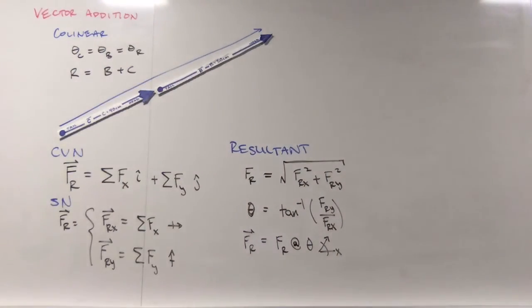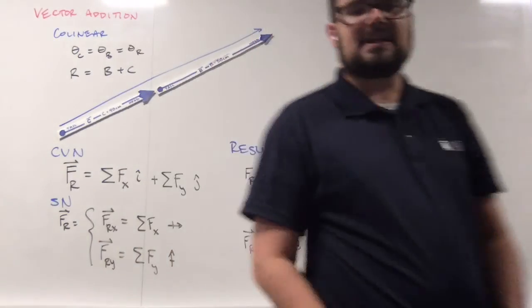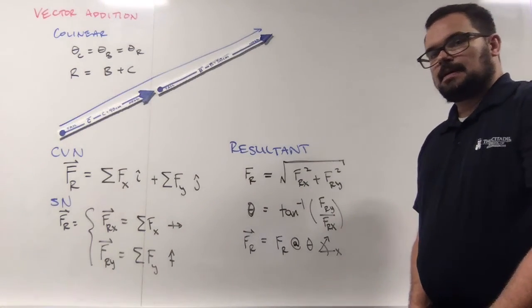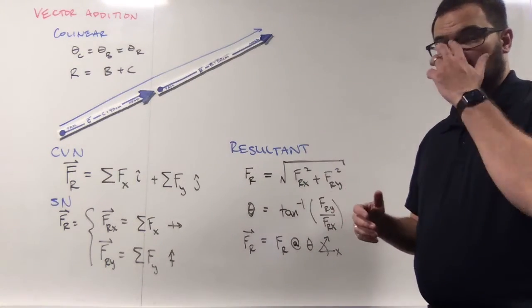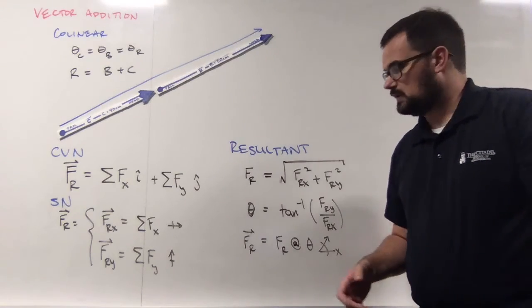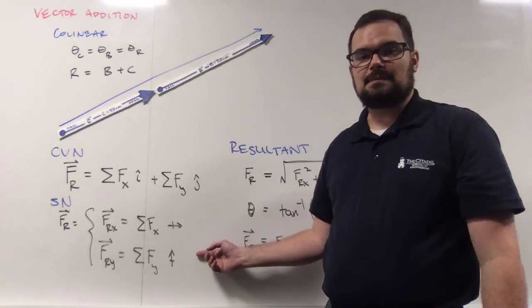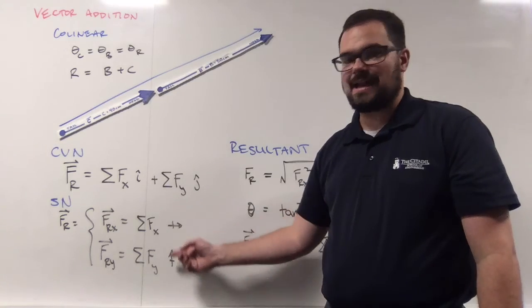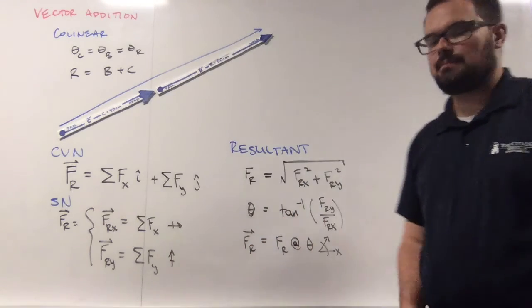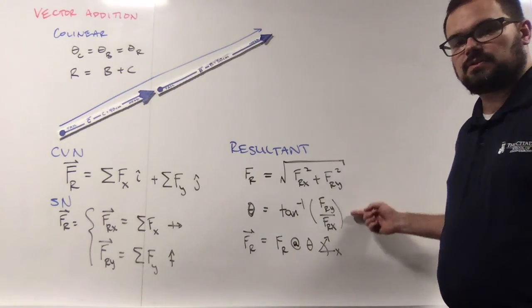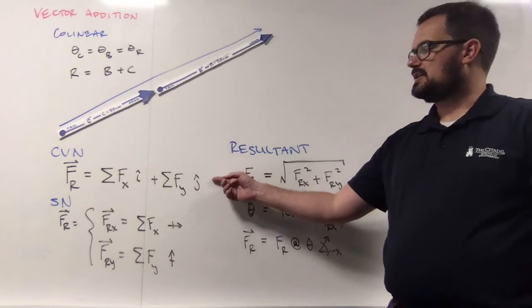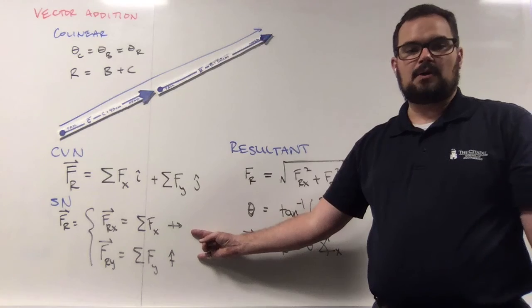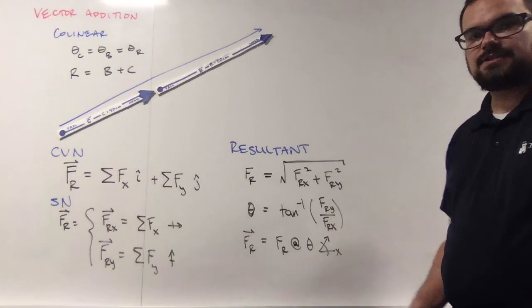And so this allows us to do vector addition using Pythagorean theorem, our sines, cosines, and tangents, just by, rather than having to work through all the law of sines, law of cosines for a triangle rule, we can simply break it into its components using what we talked about in the previous video, add up the x-components, add up the y-components, calculate the resultant force and angle, and express it either in Cartesian vector notation, component scalar notation, or a total scalar notation.